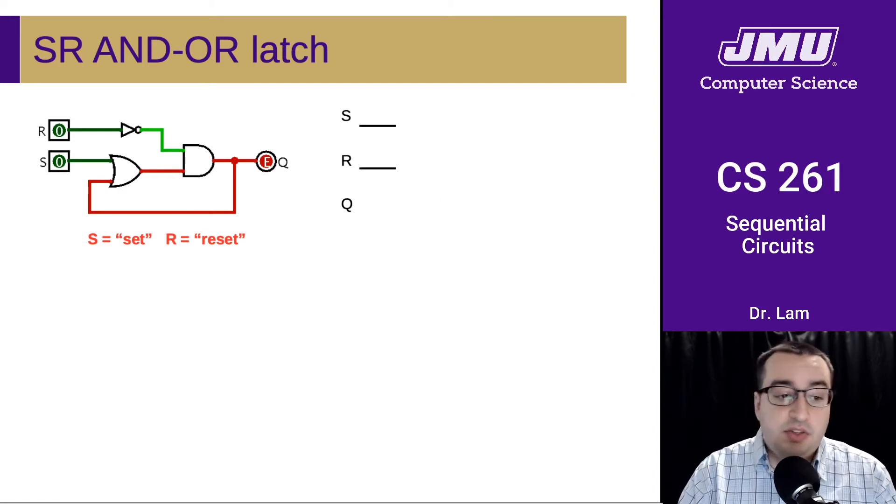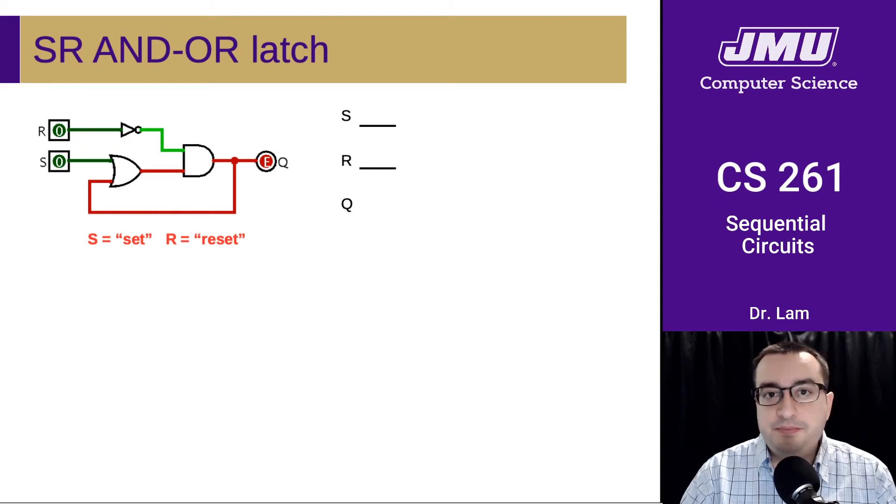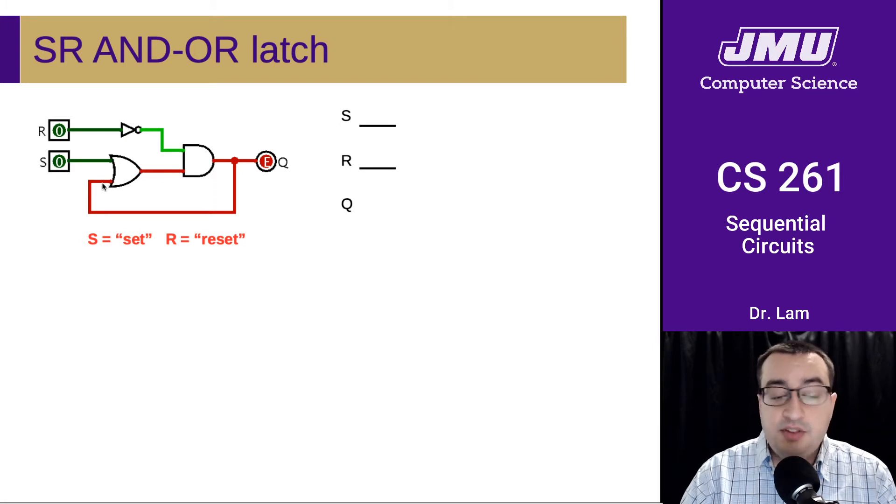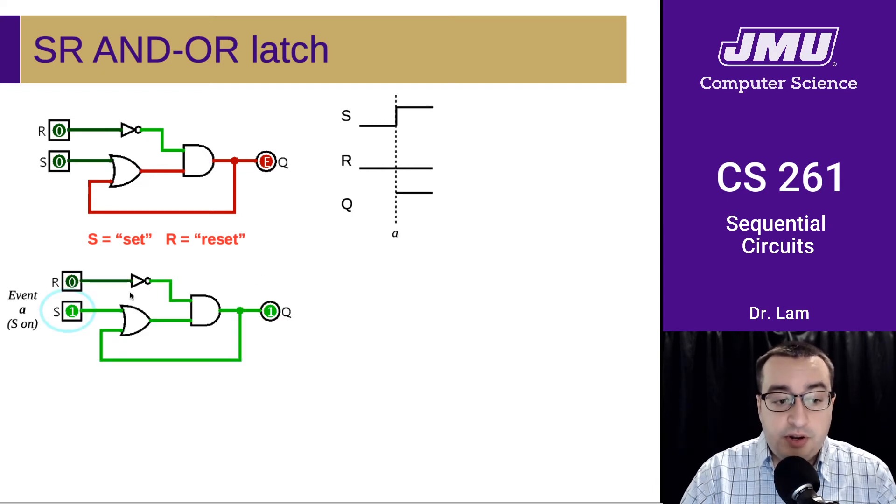So the first question is this: What happens if we turn on the S signal? Pause for a second and see if you can predict what's going to happen. If we turn the S signal on over here, the effect that that's going to have is that now we know the output of the OR. Because it doesn't matter what this value is anymore. As long as one of the inputs is one, the output is going to be one. So that's what happens. This signal becomes a one.